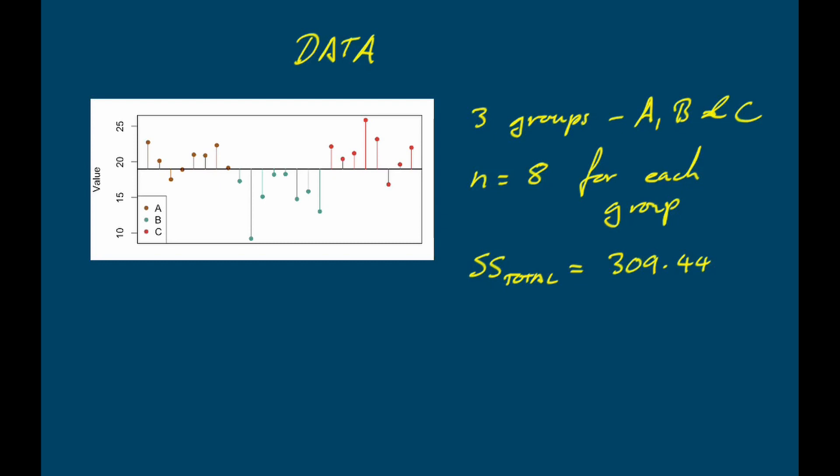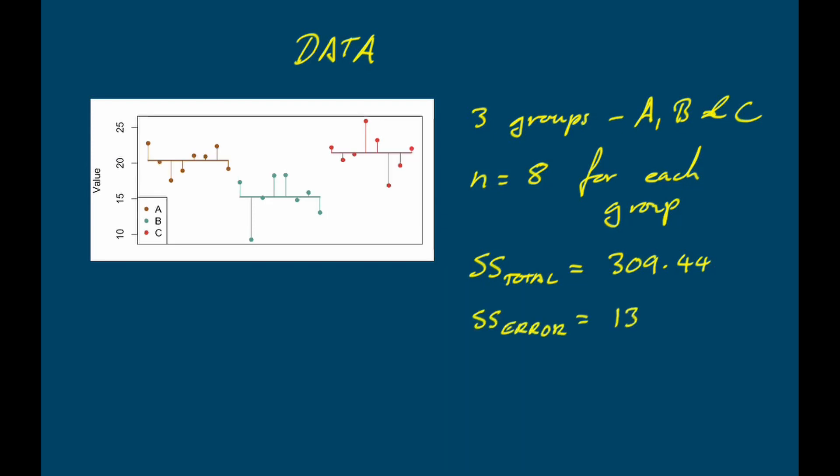To calculate the error sum of squares, we do the same thing but calculate a separate mean for each group — group A, group B, and group C — and subtract the group mean from each corresponding data point. We square all the results and add them together, giving us an error sum of squares of 134.77. Knowing the number of groups, the sample size, the total sum of squares, and the error sum of squares, we can now derive an ANOVA table.